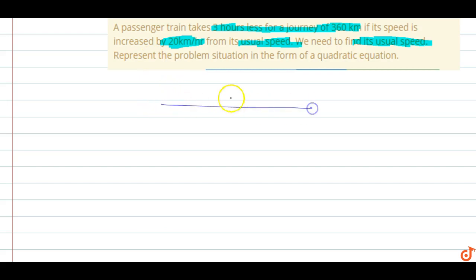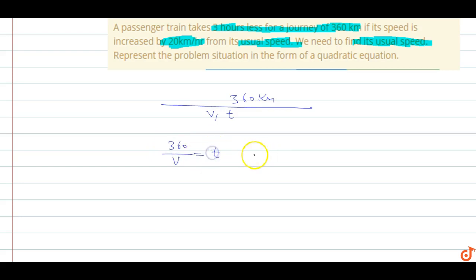Suppose the total distance is 360 km, time taken is T, and velocity is V. So 360 upon V is equal to time T — this is equation one. Now, it takes 3 hours less when its speed is increased by 20 km, so 360 upon new speed V plus 20.